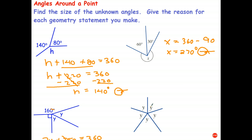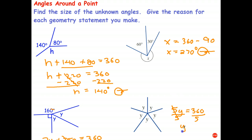This last question is probably best done using algebra, because once the variable appears more than once, that seems to be the logical way to do it. Y plus Y plus Y plus Y plus Y — we can write that as 5 times Y equals 360 degrees. And to solve that equation, we just divide by 5, and Y is 72 degrees. And we always have to give a coded reason: angles around a point add to 360 degrees.